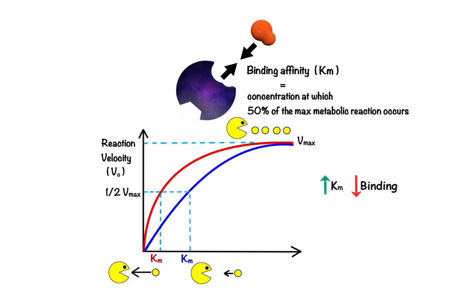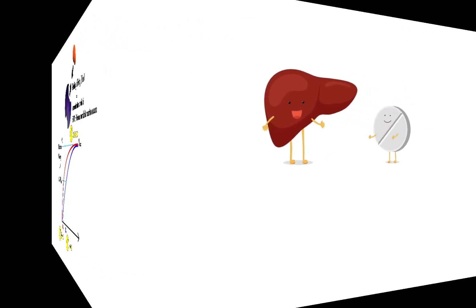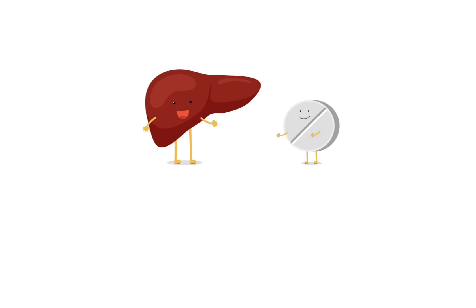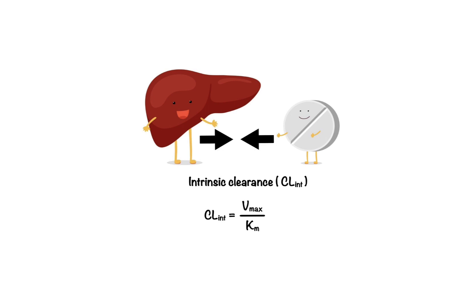Liver metabolism is the major route of elimination for a wide variety of drugs. When it comes to drug interactions, another important concept to understand is the intrinsic clearance, which measures the ability of the liver to clear unbound drug when there are no limitations to blood flow and binding considerations. The intrinsic clearance of a substrate is defined by Vmax divided by Km. If a drug binds strongly to a metabolizing enzyme, meaning Km is small, the intrinsic clearance is high. On the other hand, if a drug binds weakly, meaning Km is high, the ability of the liver to clear the drug is low. In many drug-drug interaction situations, the Km is increased for the victim drug, which results in a reduction of intrinsic clearance.